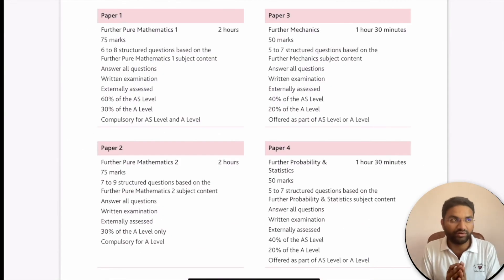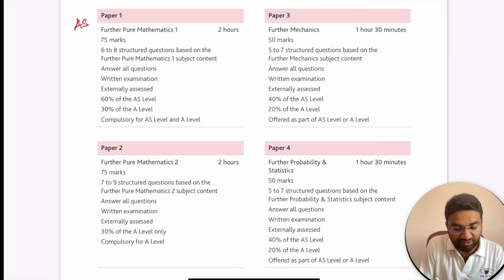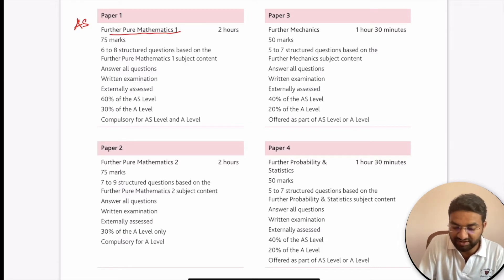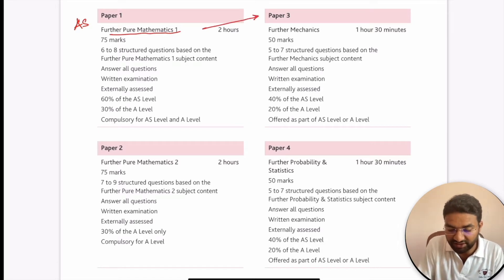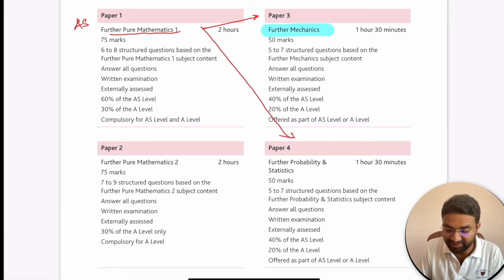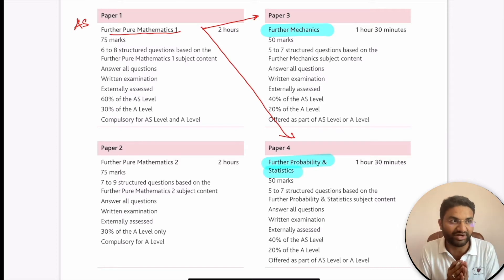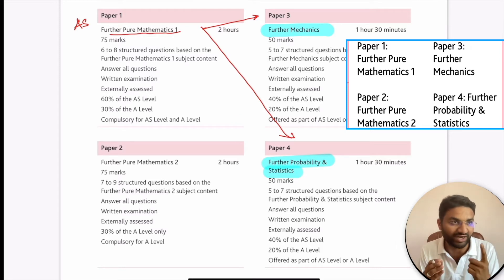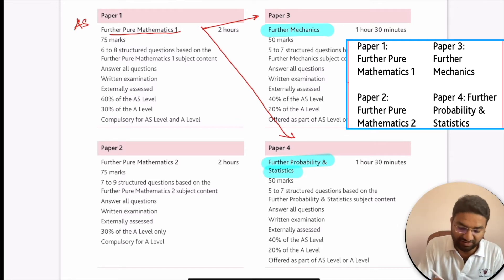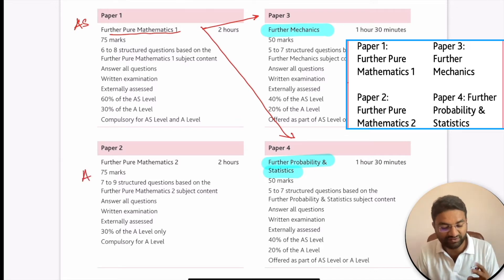Now we'll understand the paper structure and assessment overview — how you have to give the papers. At AS level, you give Further Pure Mathematics 1 along with either Paper 3 (Further Mechanics) or Paper 4 (Further Probability and Statistics). So you can take any one of those alongside Further Pure Mathematics 1 — for example, Further Pure Mathematics 1 and Mechanics gives you two papers at AS level.